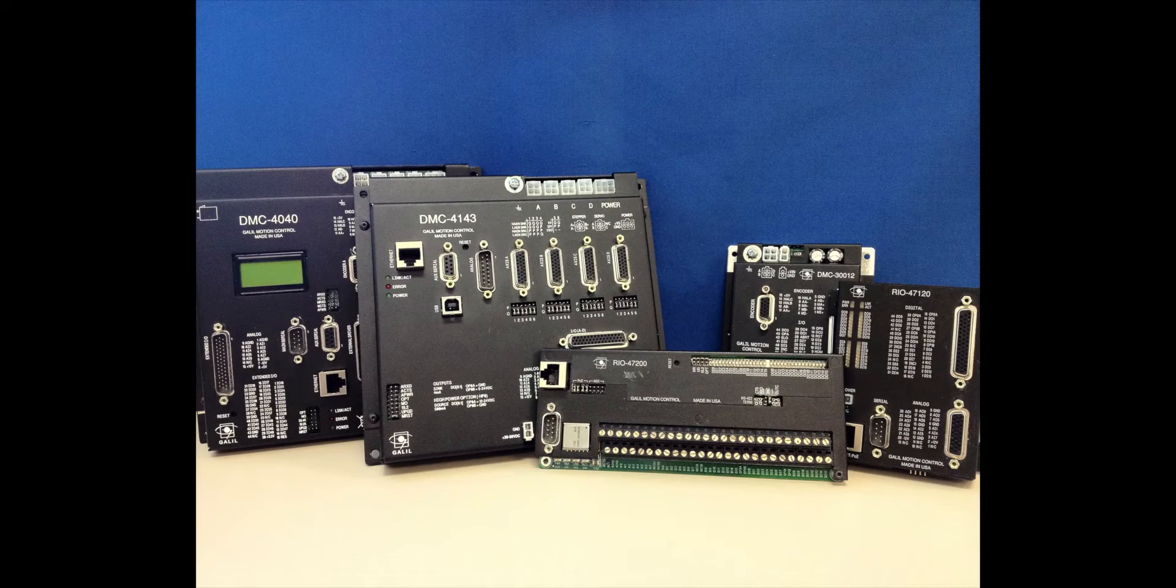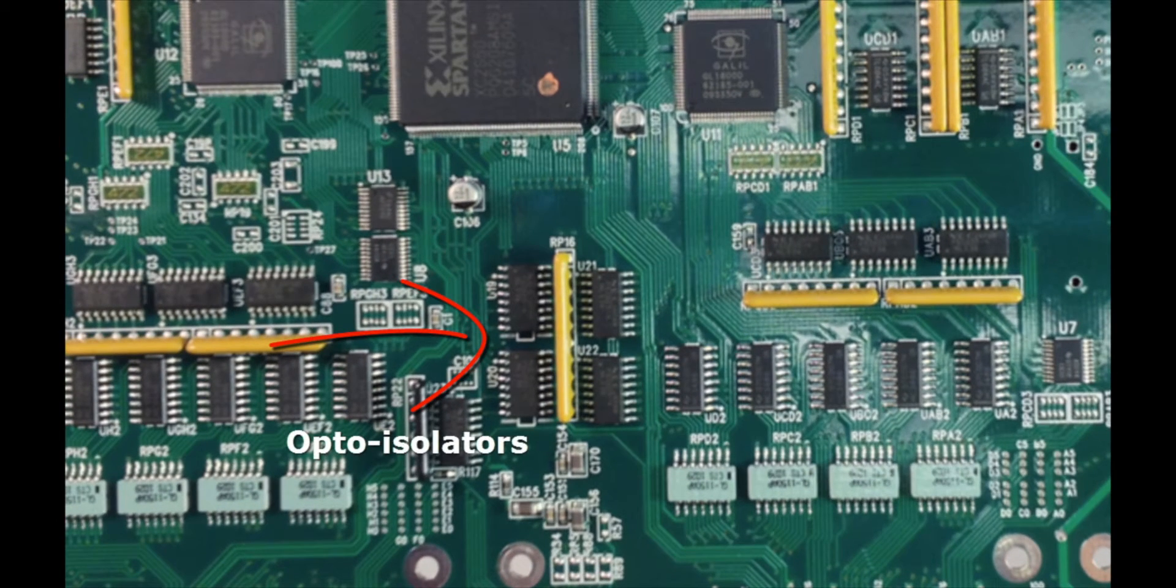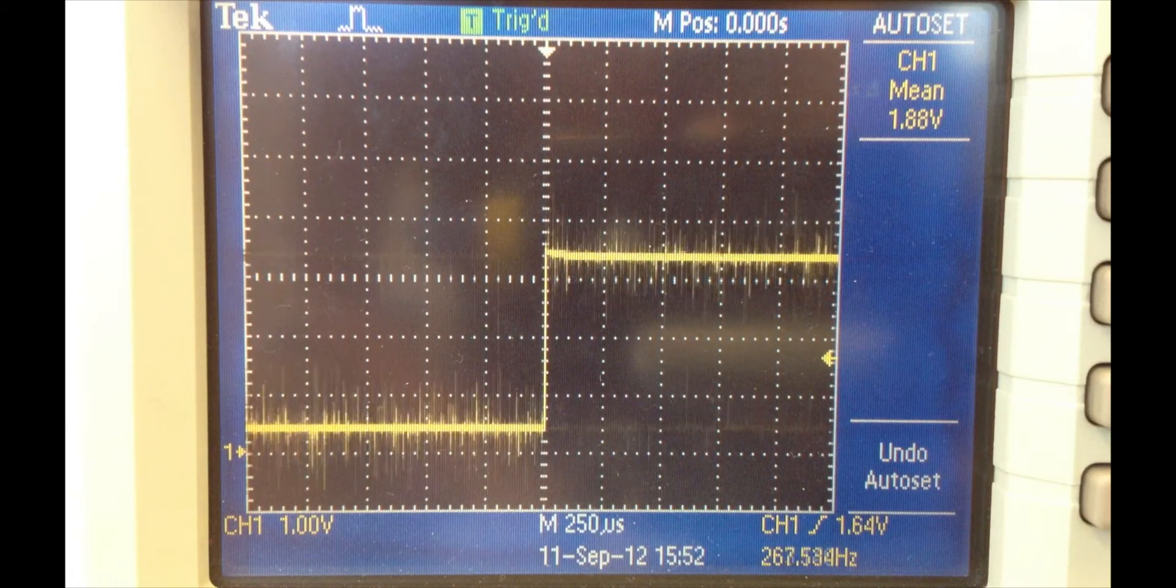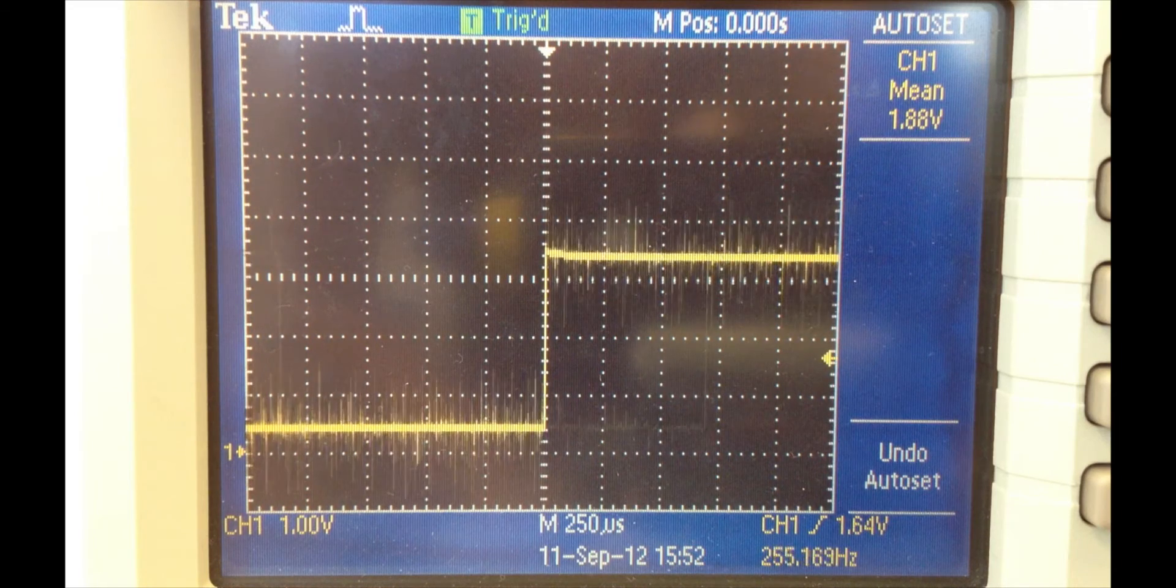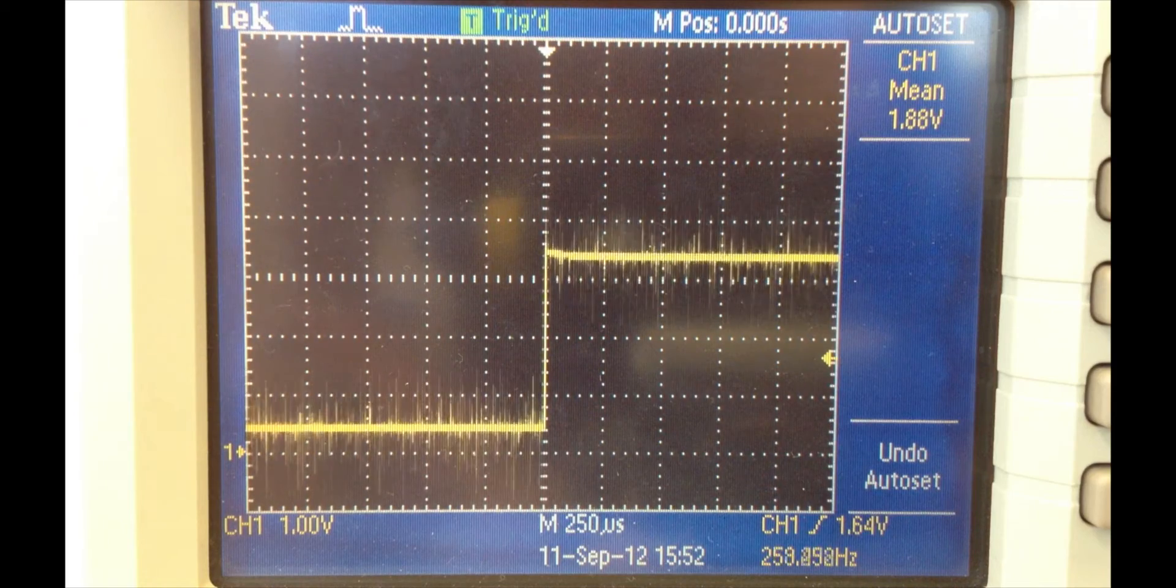Galil's latest generation controllers come standard with opto-isolated outputs. Opto-isolation allows for the outputs to be electrically isolated from the controller. One of the biggest benefits to opto-isolation is that it prevents noise or voltage spikes on the output lines from affecting the controller's internal logic.